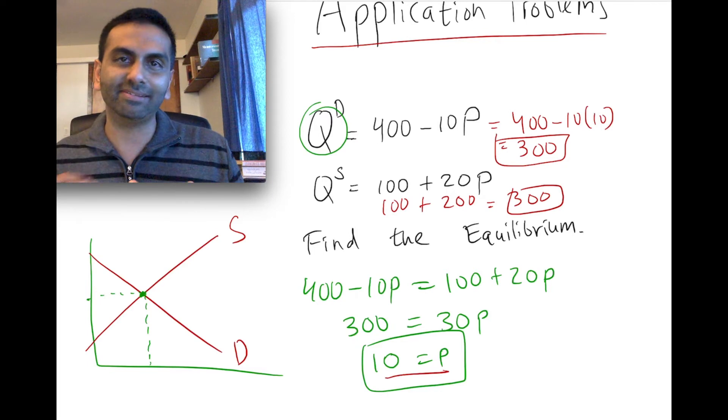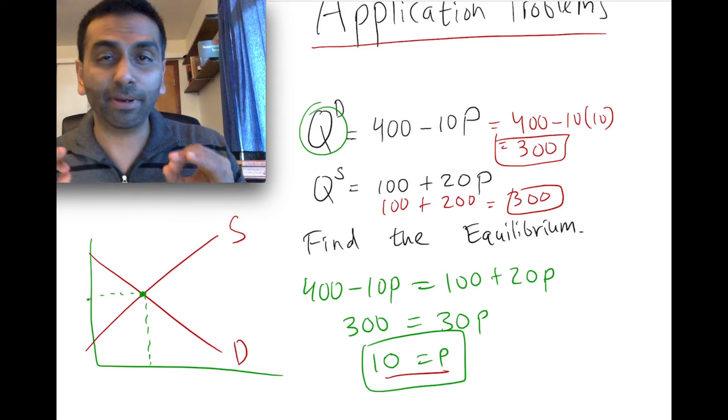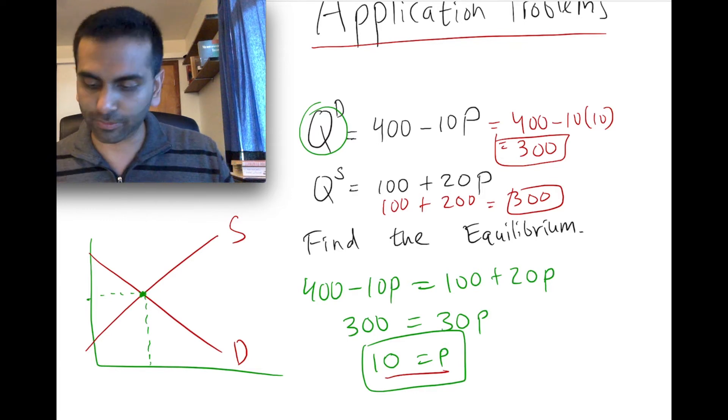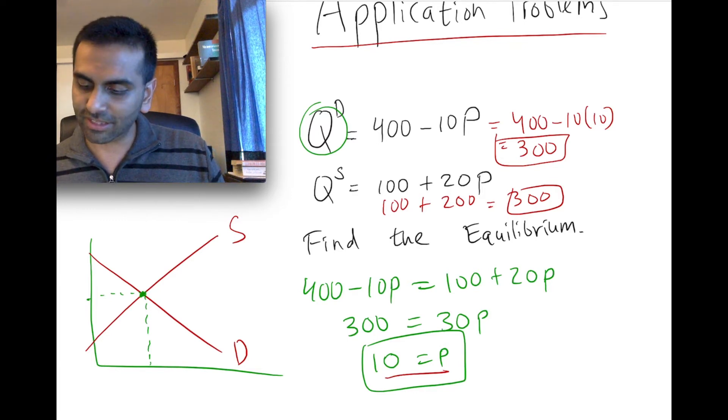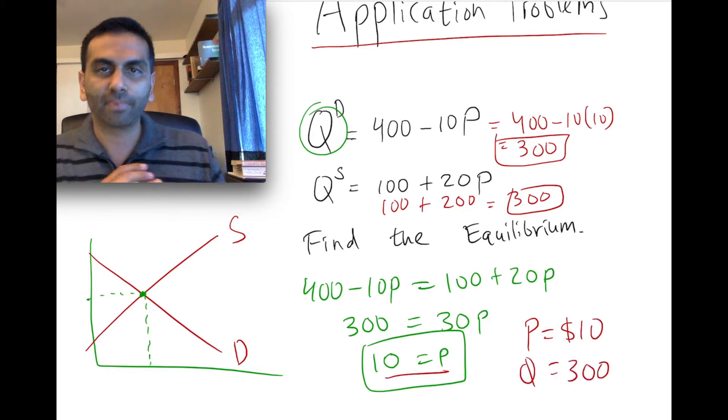So we didn't need to do both ways. That was just us checking our answer. And now we're not 99, but 100% sure that we did the algebra right. And our final answer is that the equilibrium is that the price is $10 and that the quantity is 300 units.